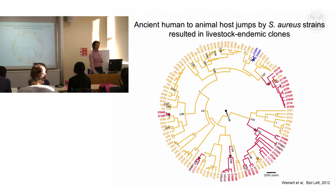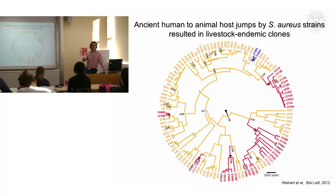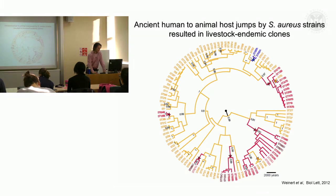However, at these points in the tree — indicated by stars — the capacity to infect ruminants has evolved on multiple occasions during the evolutionary history of Staph aureus. This presumably happened through human-to-animal host jump events followed by adaptation of the bacteria to their new host. These stars represent the host jump events which have occurred.